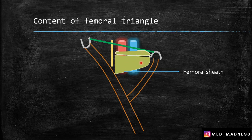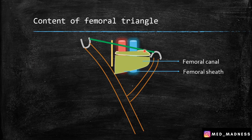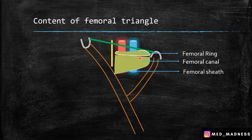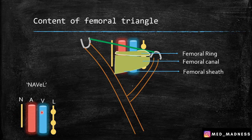Note that there is some space here, and this canal is called the femoral canal. The femoral sheath contains the femoral artery, the femoral vein, and the femoral canal. The superior portion of the femoral canal is called the femoral ring. The content of the femoral canal is lymph nodes. To remember the contents, just remember NAVL: N for nerve, A for artery, V for vein, and L for lymph nodes. Note that the femoral sheath doesn't contain the nerve — it has only the artery, vein, and the femoral canal that contains the lymph nodes.